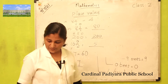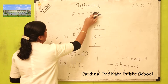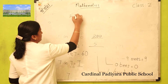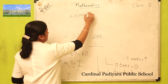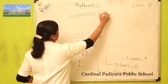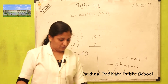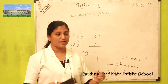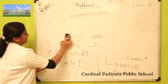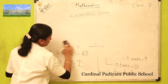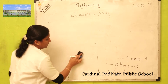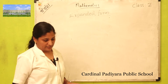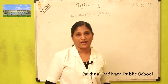All of you understood the place value. The next topic is expanded form. Expanded form means writing numbers in terms of hundreds, tens and ones — that is the expanded form.